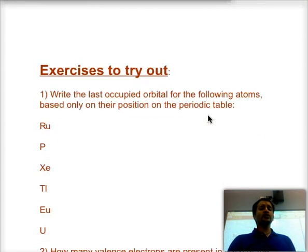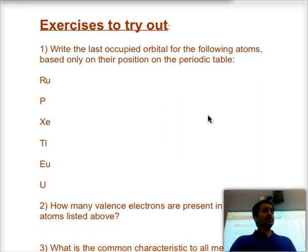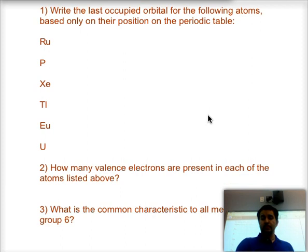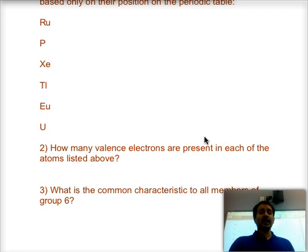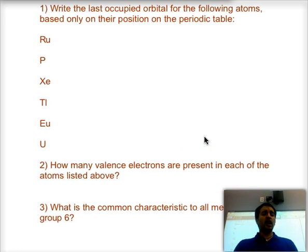Having done this, I want you to try the following exercises. First, try to write the last occupied orbital just based on the position of the periodic table for roentgenium, phosphorus, xenon, thallium, europium, and uranium. I've given you a couple of those ahead of time, or at least uranium I have. Then how many valence electrons are present in each one of the atoms that I listed above? And finally, what is the common characteristics of all members of group 6? Give that a try. If you can do it, all beautiful, excellent, and if not, still give it your best try. That is the most important. See you next time.